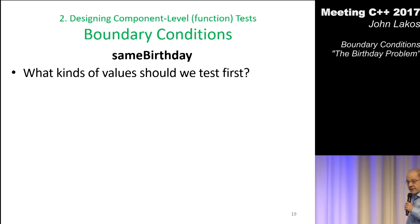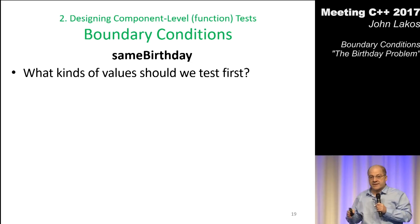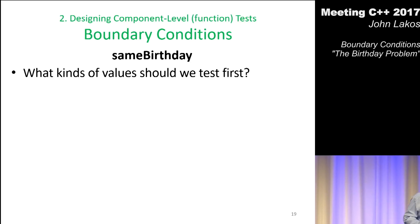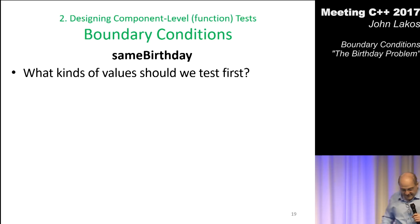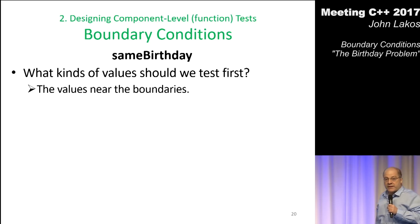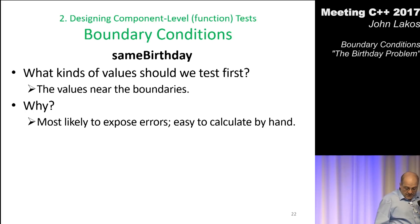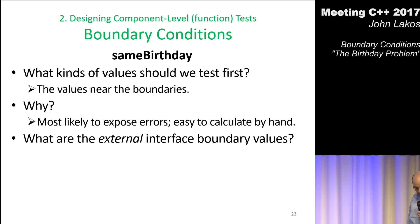So, what kind of value should we test first? There really is some importance to this — testing really does matter, and it's something I've done for a very long time. What kind of value should we test first? How about the values near the boundaries? Why? Because they're the most likely to expose off-by-one errors, and they're easily calculated by hand. What are the external interface boundaries? How about zero and INT_MAX? What are the internal interface boundaries? Well, 1, 2, 355, 356 — those are kind of numbers that are important. We can quickly calculate those.